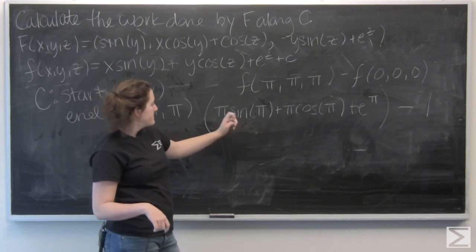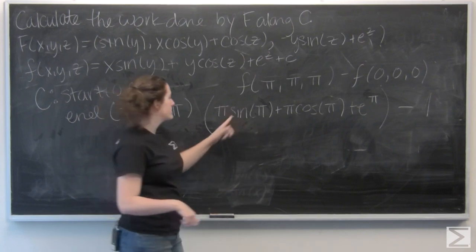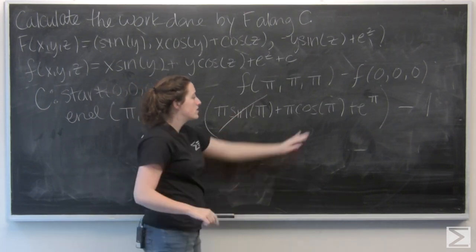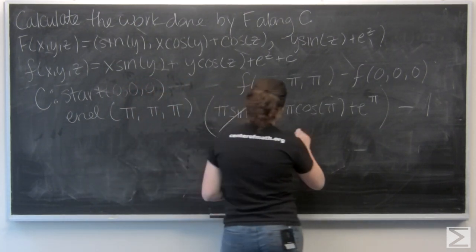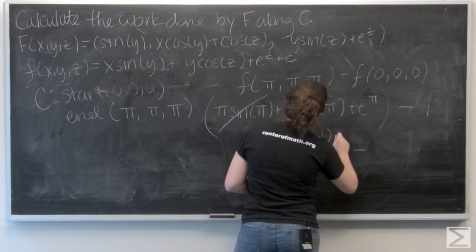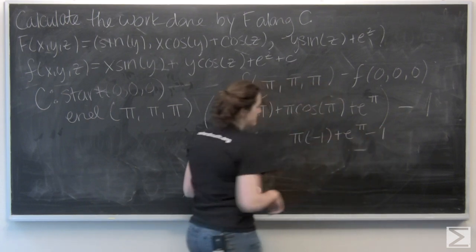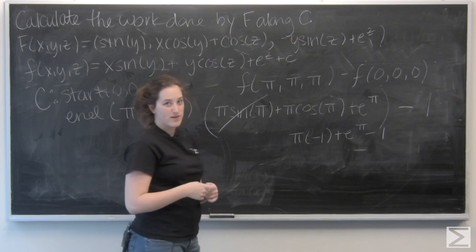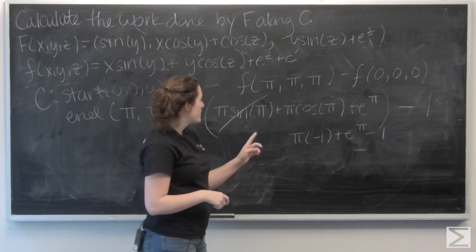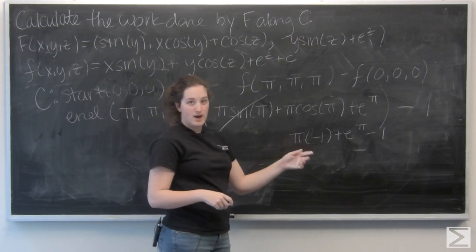Now let's work on evaluating this. Well, I know sine of pi is 0, so this is going to cut out. Cosine pi is negative 1. E to the pi is some constant that I don't know off the top of my head. So, I've got e to the pi minus pi minus 1.